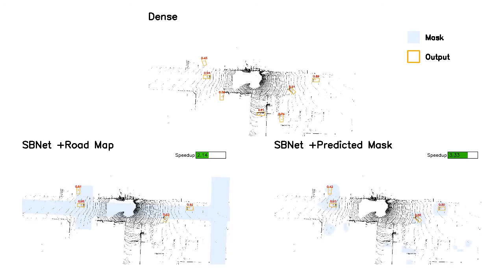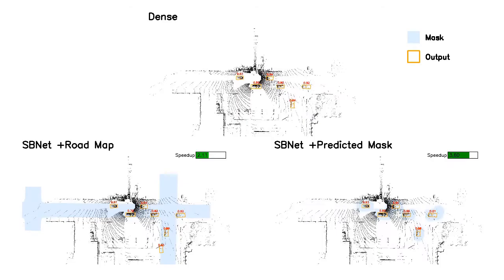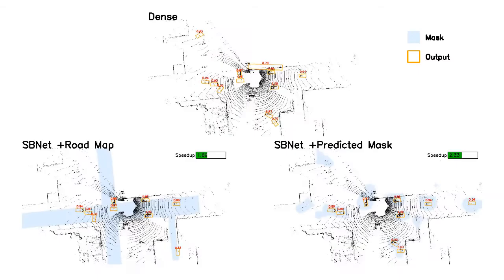In this video, the light blue regions represent the mask, while the orange boxes represent the detection output. Compared with the dense CNN baseline, the roadmap shows a 2x speedup on average with improved detection accuracy. The predicted mask has a 3x speedup on average with no significant loss in accuracy. For more details, please refer to our arXiv paper.